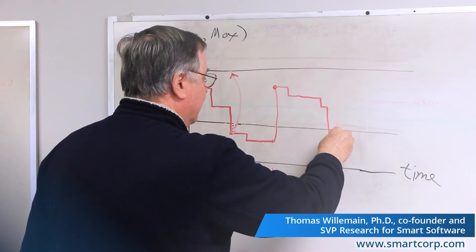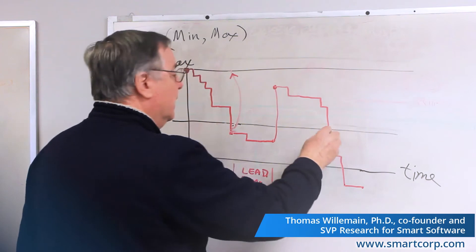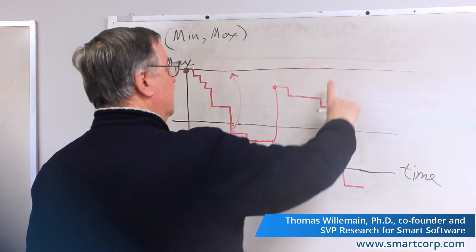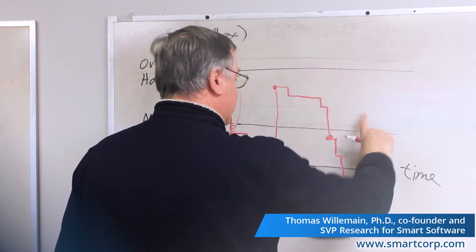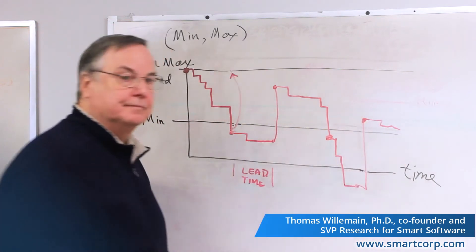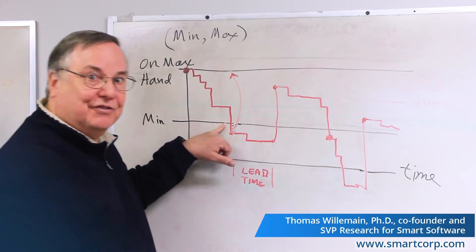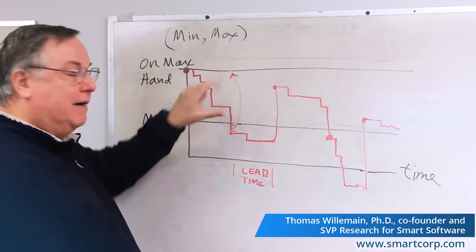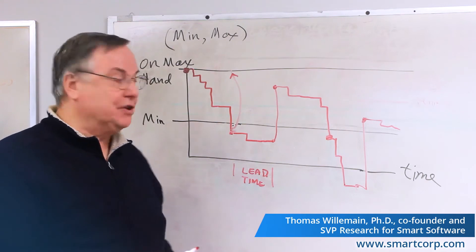Maybe we have some big demands and we end up in negative territory. At that point, when we went through, we determine how much we need. After a lead time, that much comes in and we get back above the max and continue on. The only essential difference is when we hit the reorder point — now called the min — we try to get back up to the max. So we have a random order quantity at each period.